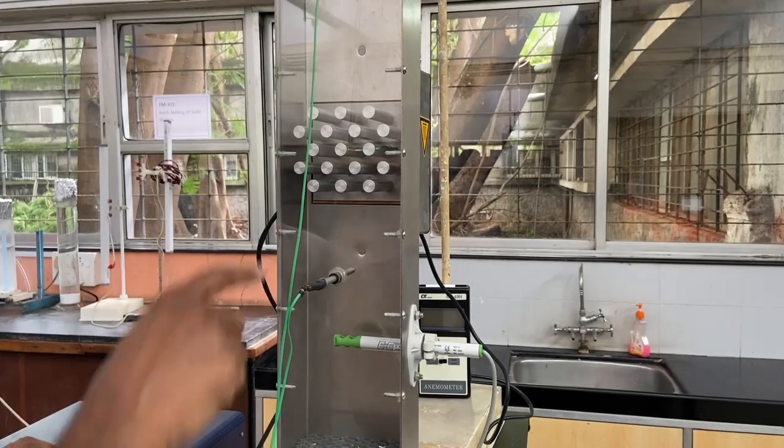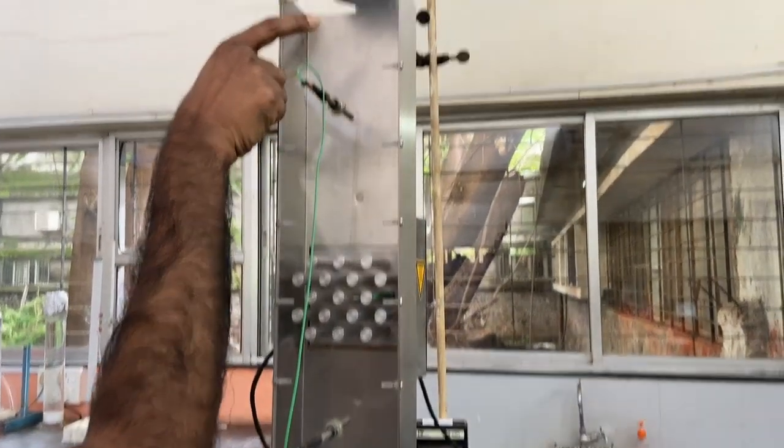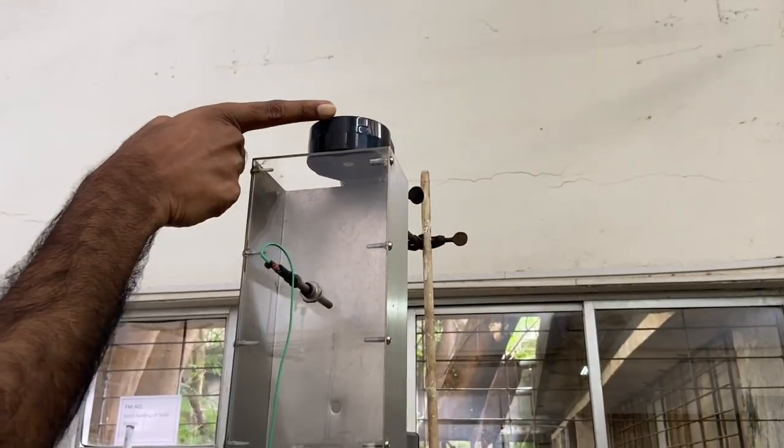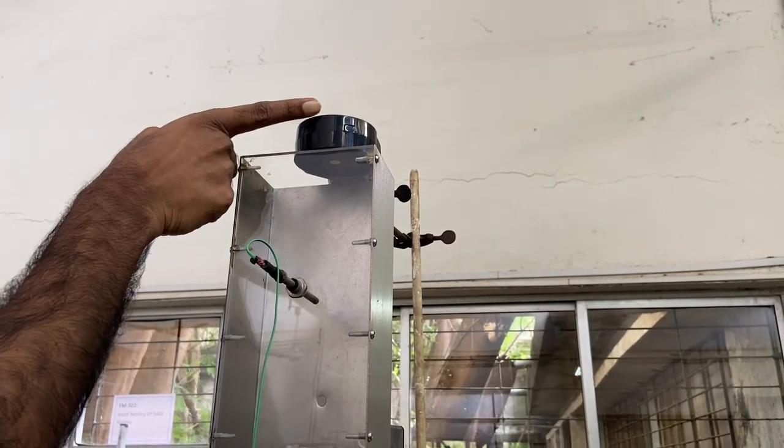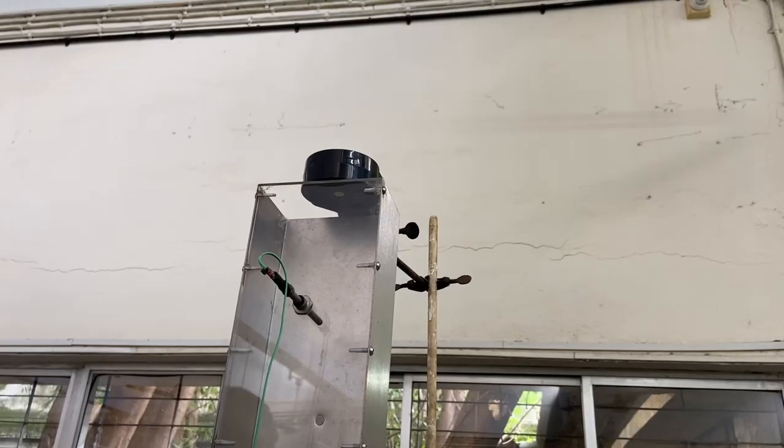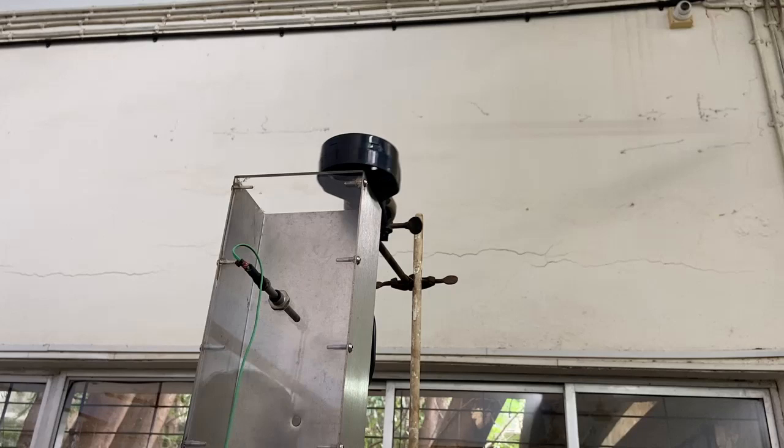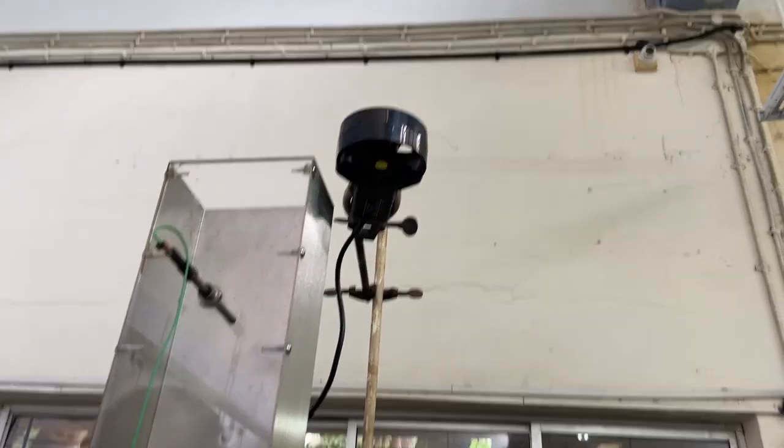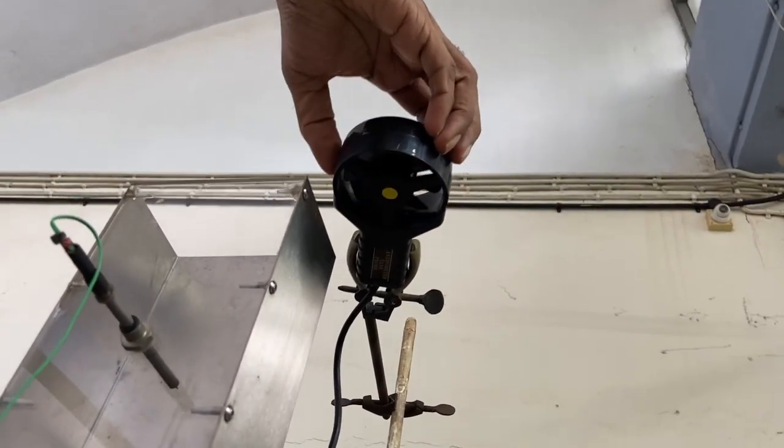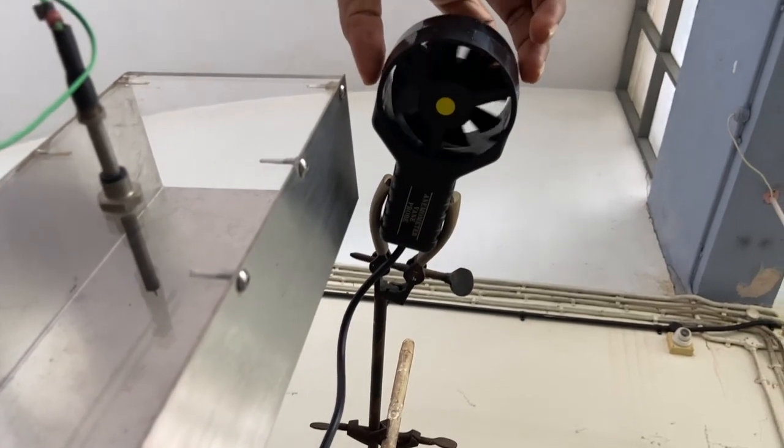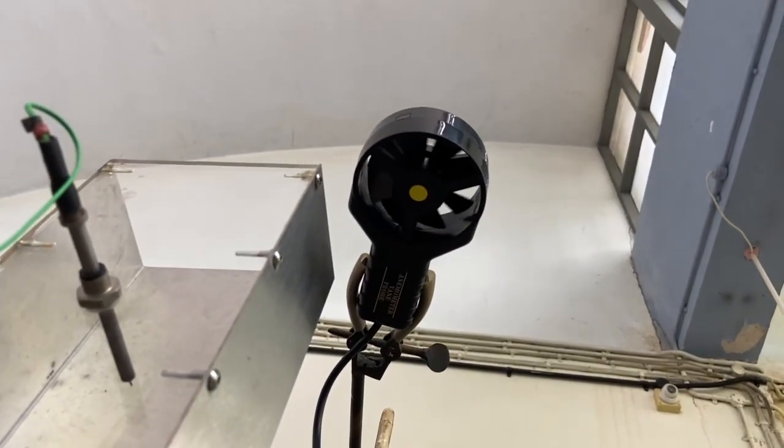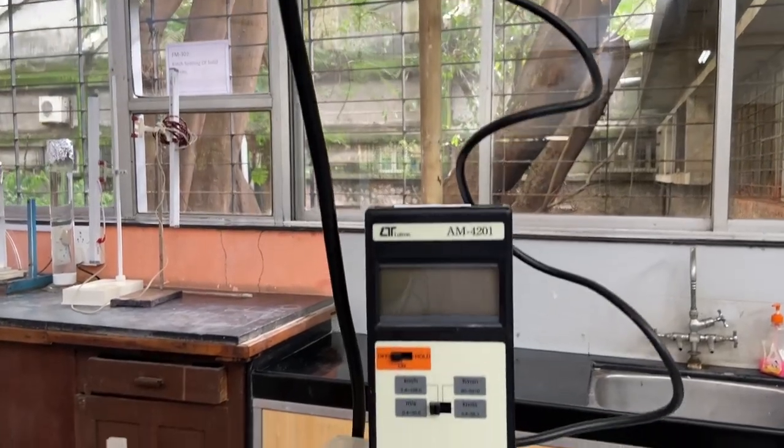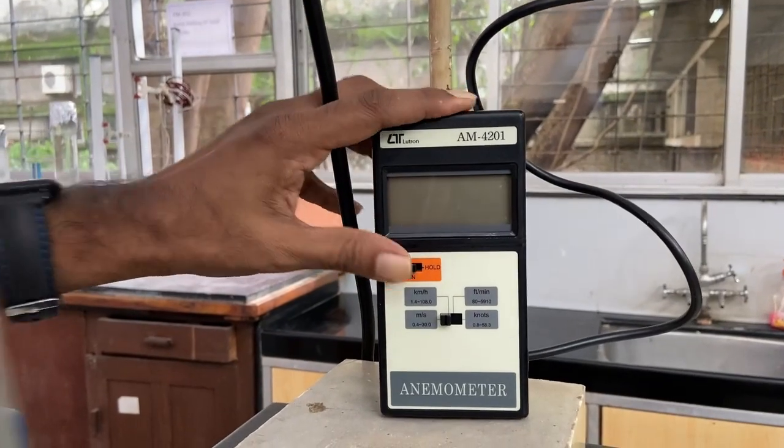We can also measure the outlet air velocity by placing an anemometer at the top. The anemometer is simply a fan that is calibrated so that the rotation speed can be related to the linear velocity of air that is passing through it. The anemometer gives the readings directly on this display.